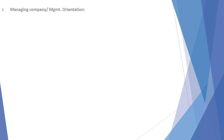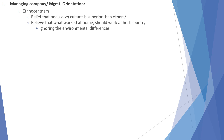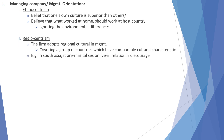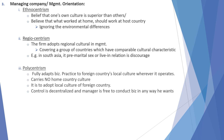Managing company or management orientation: first is ethnocentrism, where it is the belief that one country's culture is superior to others — the belief that what works at home will work in the host country as well, ignoring environmental differences. Next is regiocentrism, where the firm adopts regional culture in management, covering a group of countries with comparable cultural characteristics — for example, in South Asia, premarital sex or live-in relationships are discouraged. Next is polycentrism, where the firm fully adapts its business practices to the foreign country and culture.